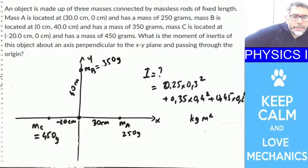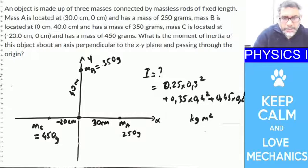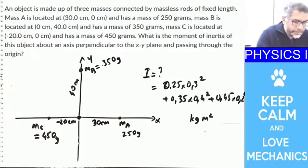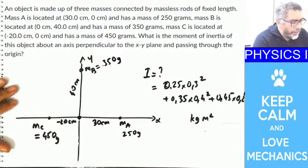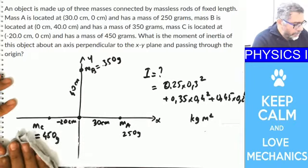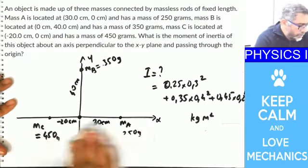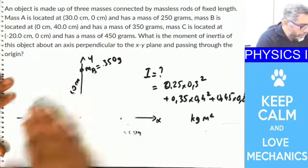A student mentions the answer shown is 2K for the previous question, but the correct answer is 32K. Some question answers were entered incorrectly.